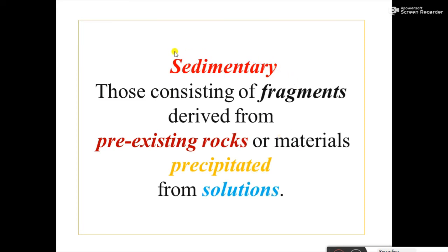The second type is sedimentary rock — those consisting of fragments derived from a pre-existing rock, or material precipitated from a solution. Sedimentary rock forms from pre-existing rock through precipitation and other processes.